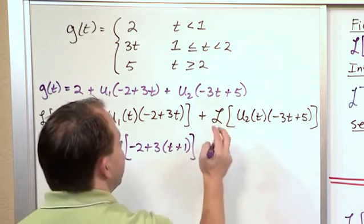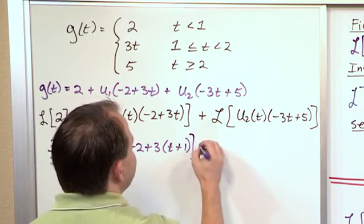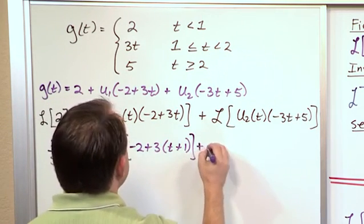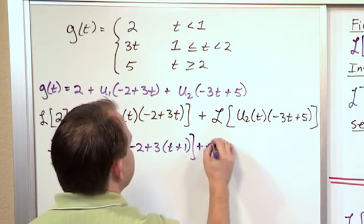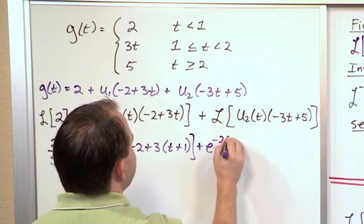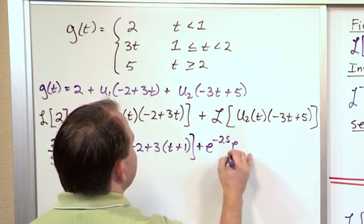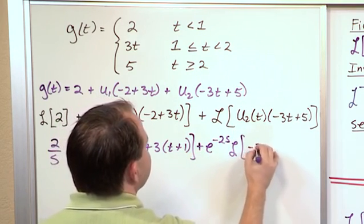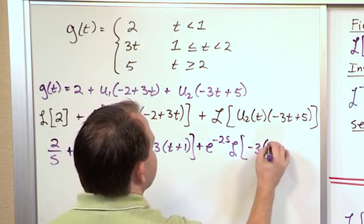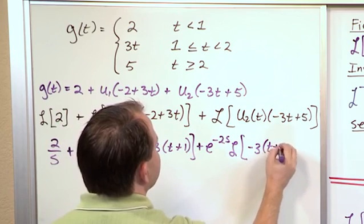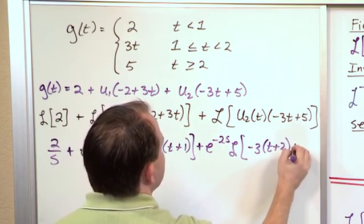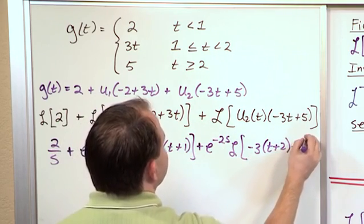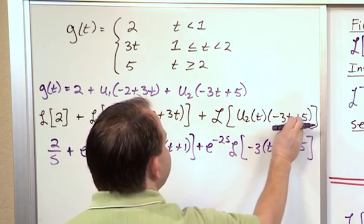For this one, the step is at time 2, so it's basically the same thing: e to the minus 2s. We still have to take the Laplace Transform of negative 3 times t plus 2, plus 5. So we're shifting by 2.